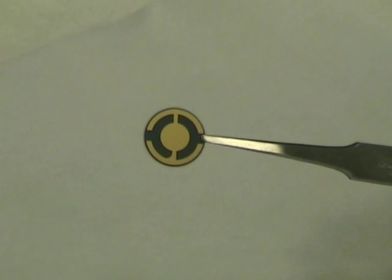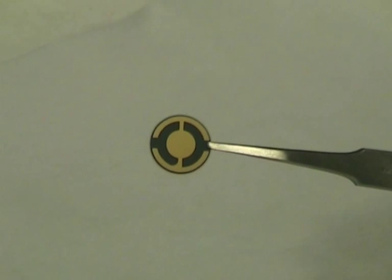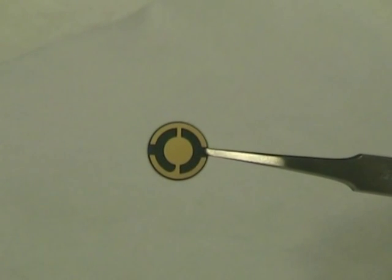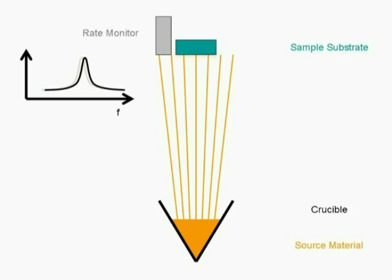The rate monitor is a quartz crystal that can be made to vibrate at a known resonant frequency. As material is deposited on it, the resonant frequency drops. There are relationships between the material properties of the source material — the acoustic impedance and the density — and the change in frequency with thickness.